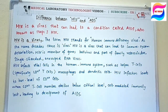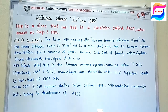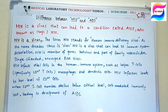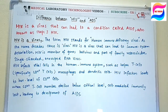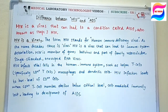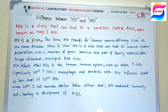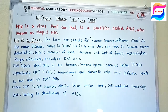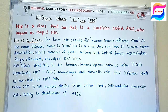HIV infects the human immune system. The main targets of HIV are vital cells in the immune system, specifically helper T cells. T cells are a type of lymphocyte, and lymphocytes are a major type of white blood cells (WBCs or leucocytes). HIV specifically targets CD4+ T cells, as well as macrophages and dendritic cells.